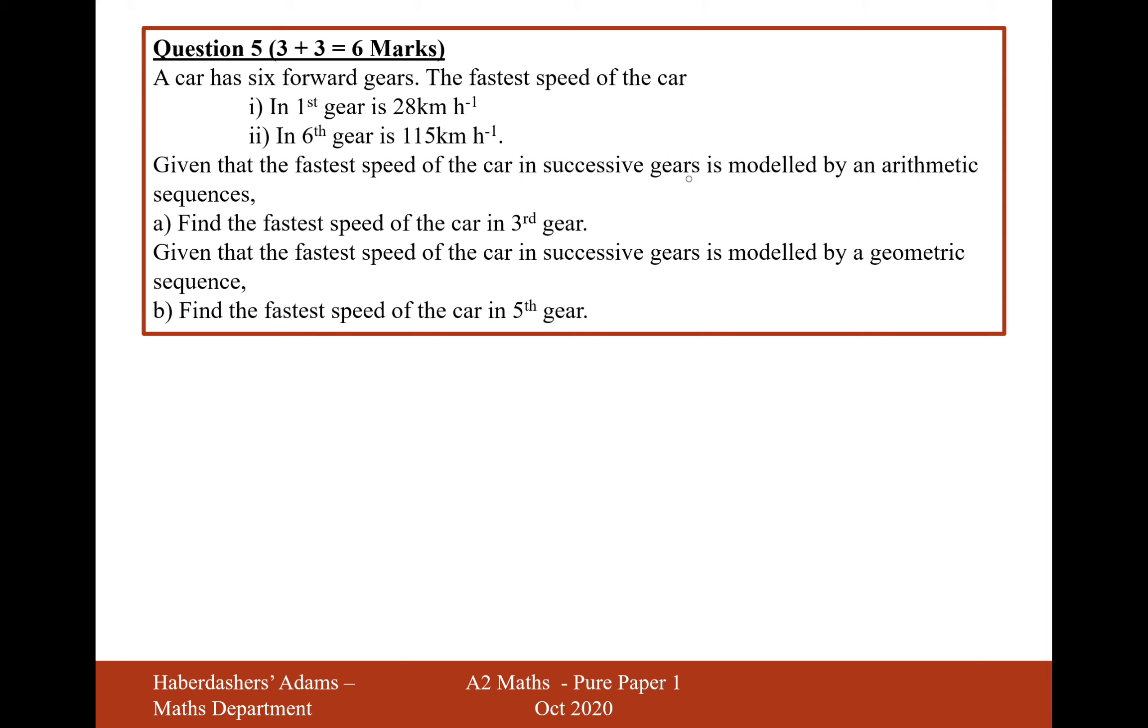Given that the fastest speed of the car in successive gears is modeled by an arithmetic sequence, find the fastest speed of the car in the third gear. So for this equation, in the first bit of information I've got A equals 28, and in the second bit of information I've got A plus 5D equals 115.